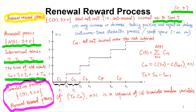So what is a renewal reward process? Basically, a renewal reward process defines ct, t greater than or equal to zero. ct is the total net cost — that is, the cost minus reward — incurred up to time t, in the interval from zero to t. This total net cost may increase or decrease, taking positive and negative values, which makes it a continuous time stochastic process.